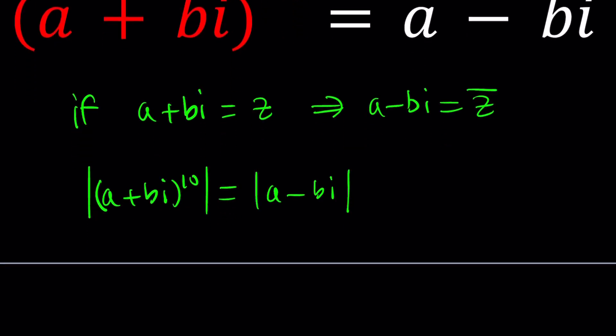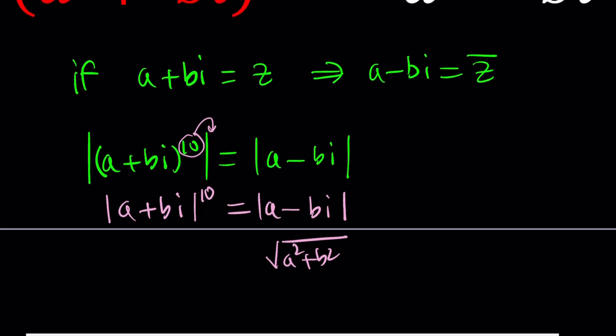And from here, we're going to get the following. We can first of all take this power outside. We have that nice property. So the absolute value of a plus bi to the tenth power is the same as the absolute value of a minus bi. But what is the absolute value of a minus bi? It's a squared plus b squared under the radical. What is the absolute value of a plus bi? It's the same thing, because two complex conjugates have the same absolute value.